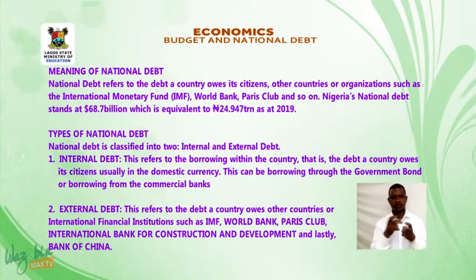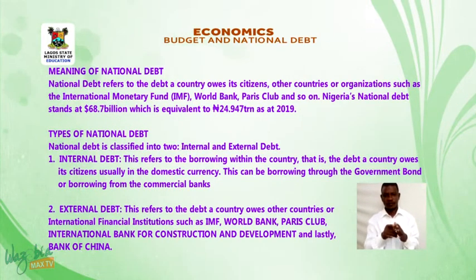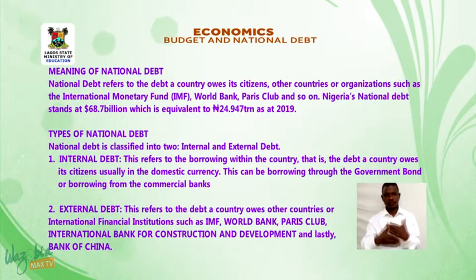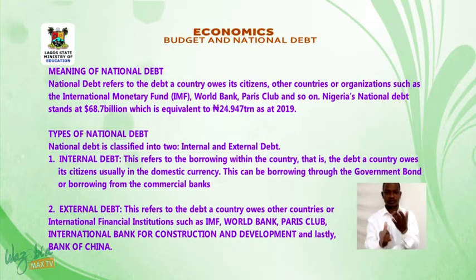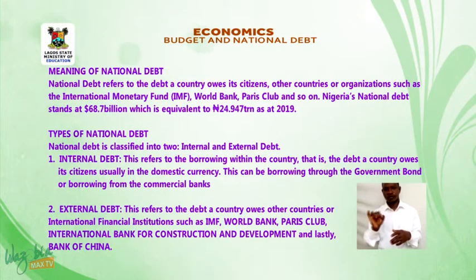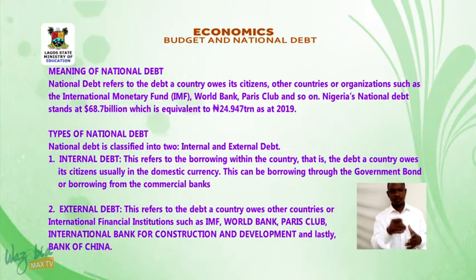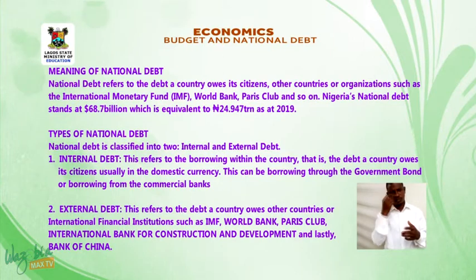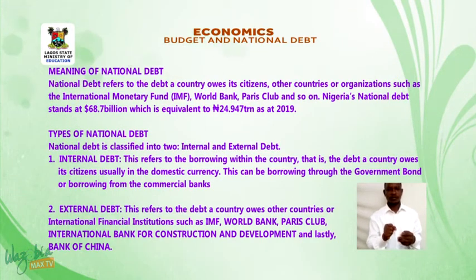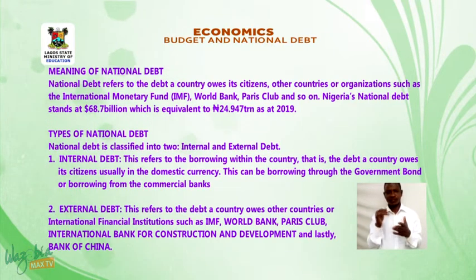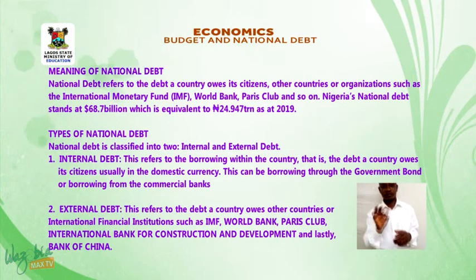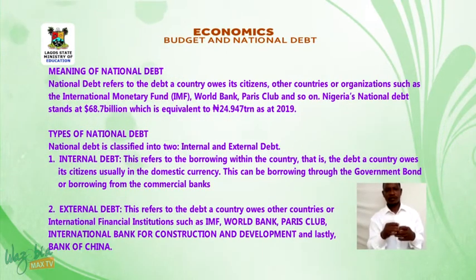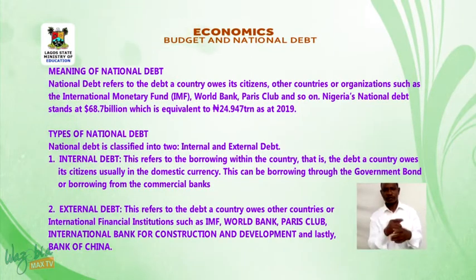Types of national debt: National debt is classified into two — internal and external debt. Internal debt refers to the borrowing within the country, that is the debt a country owes its citizens, usually in the domestic currency; this can be borrowing through government bonds or from commercial banks. External debt refers to the debt a country owes other countries or international financial institutions such as the IMF, World Bank, Paris Club, International Bank for Reconstruction and Development, and the Bank of China.